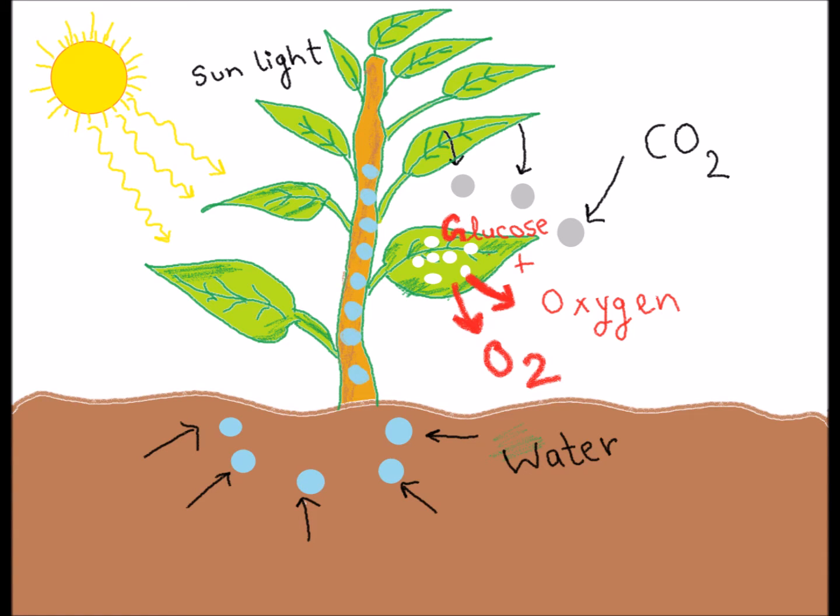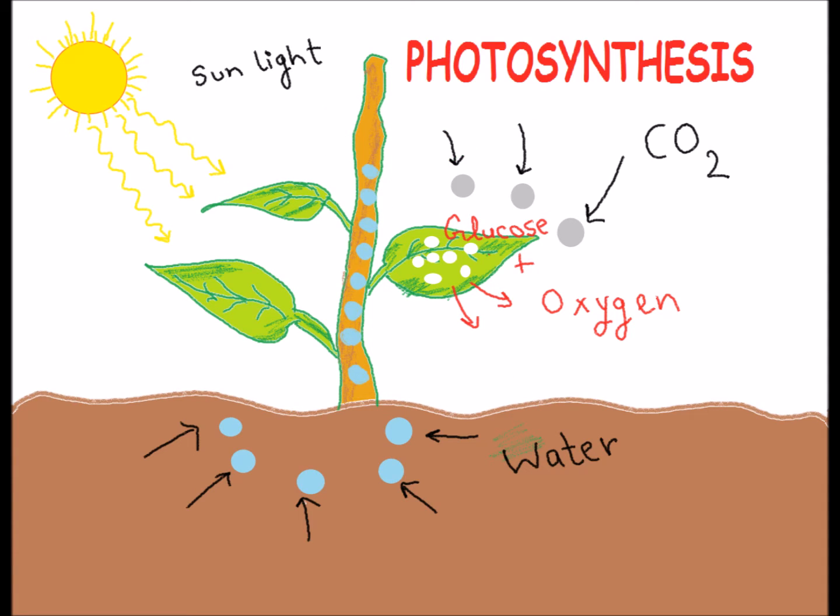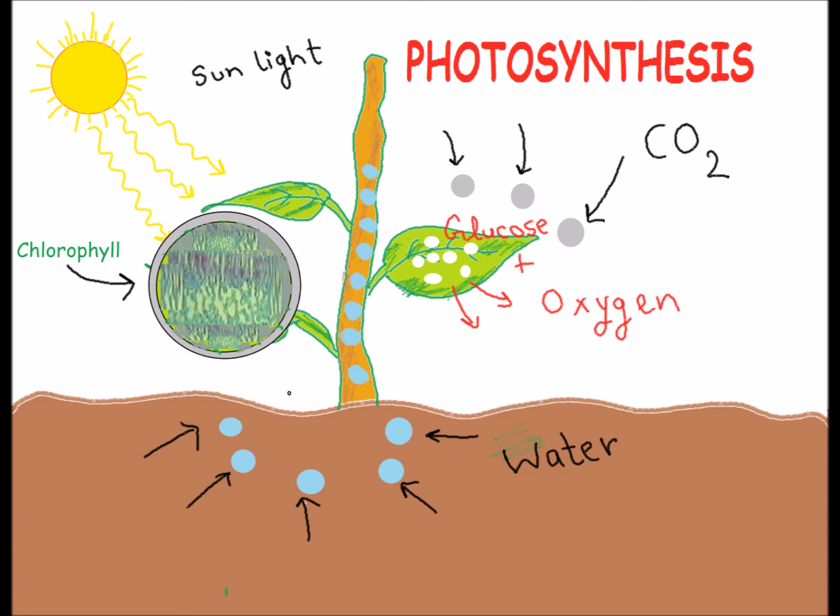Plants use glucose as food for energy and growth. This process of food making is called photosynthesis. Chlorophyll chemical helps in photosynthesis and gives leaves their green color.